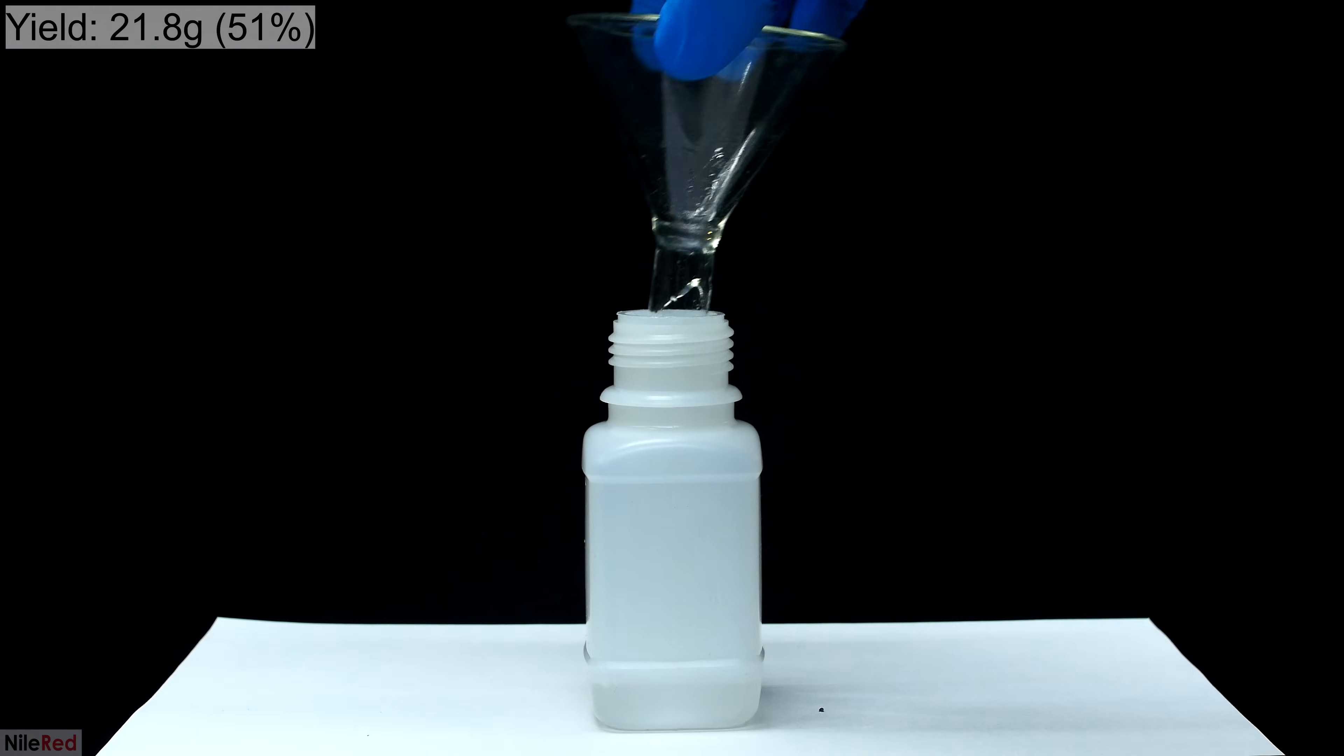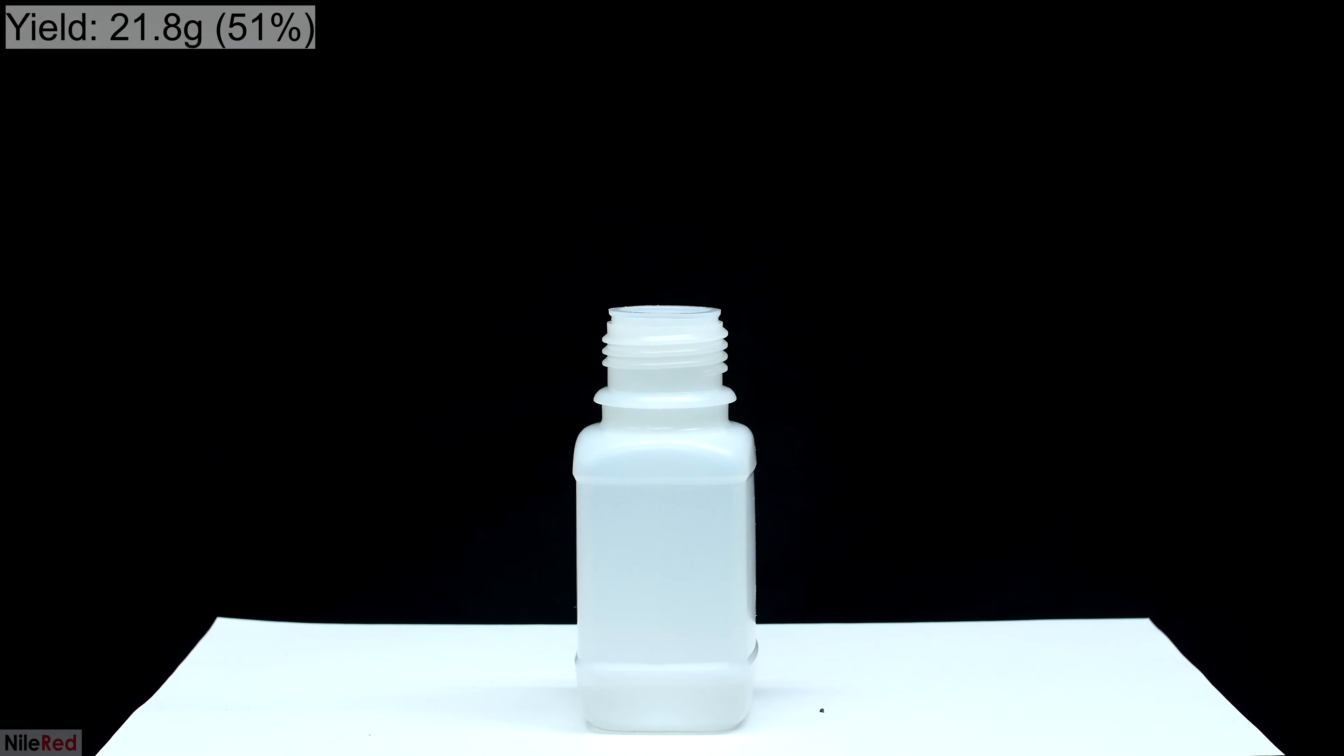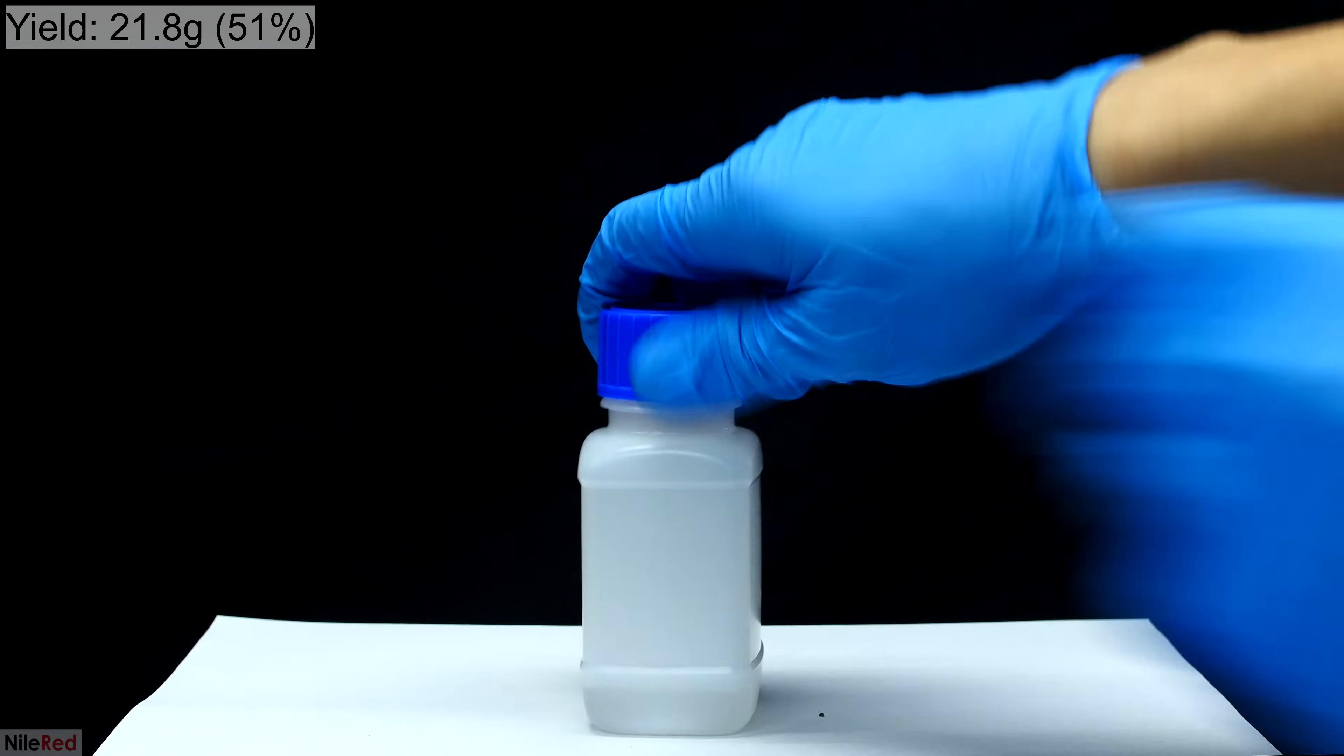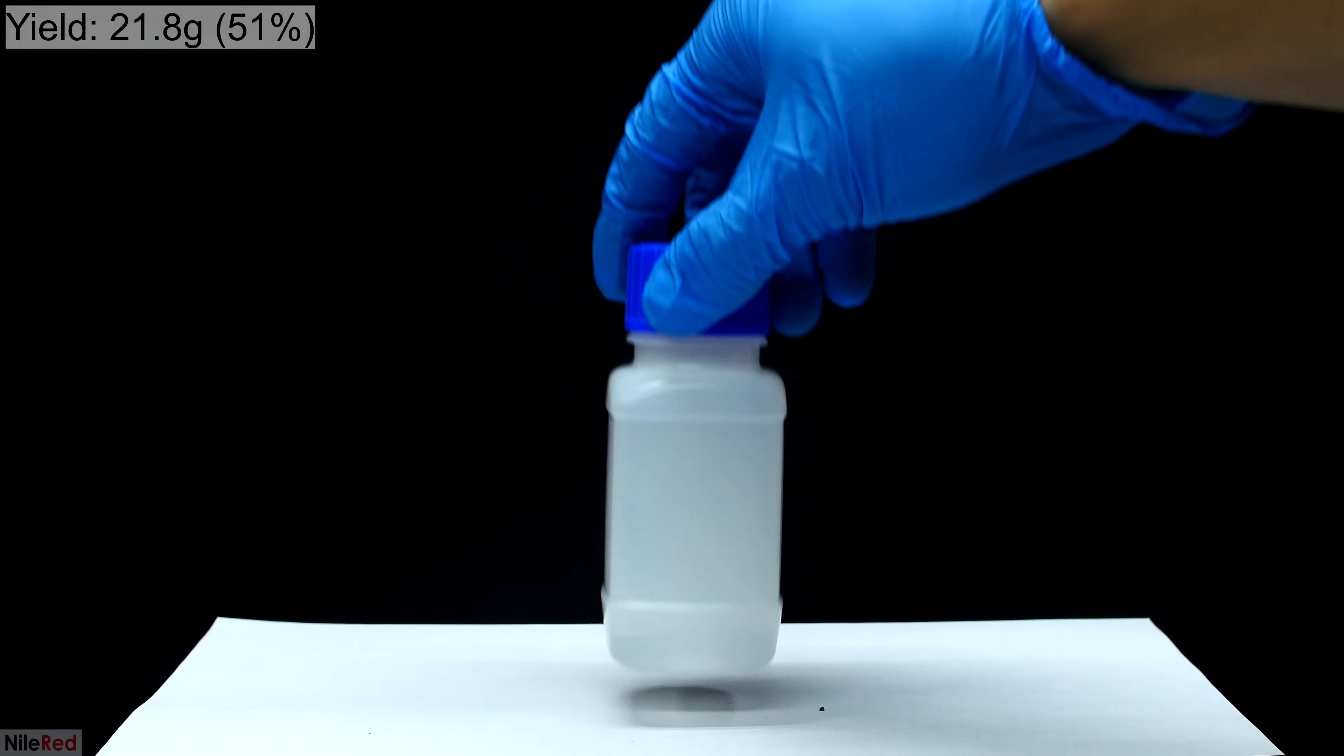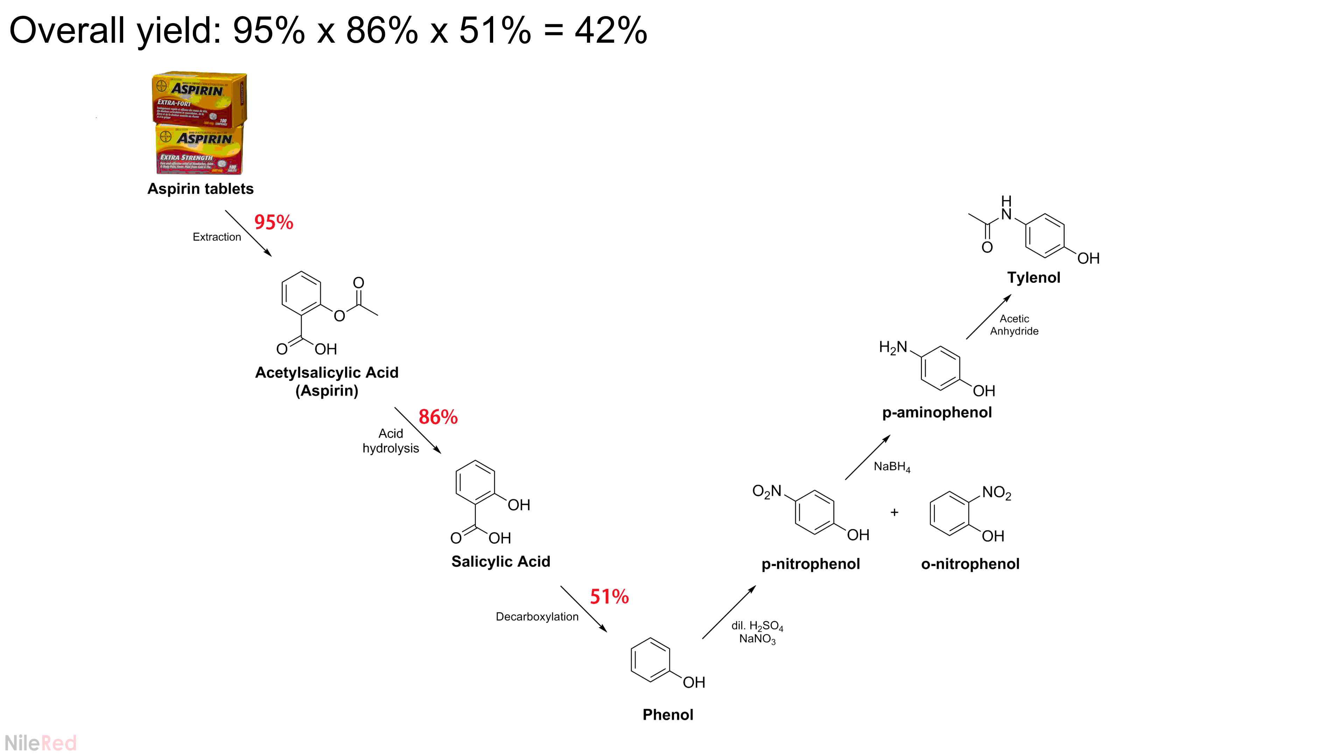The bottle was sealed and capped, and the final yield of phenol was determined to be 21.8 grams. This corresponds to a percent yield of 51%, and according to the procedure, it's a little bit on the low side. According to Unintentional Chaos, he says that the typical yield is usually between 60 and 70%. When I multiply out all of the percent yields that we've gotten from each step, we see that so far the overall process is about 42% efficient.